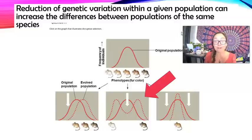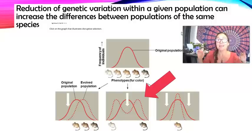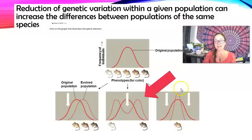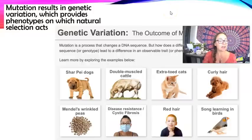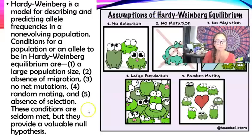Diversifying or disruptive selection can lead to speciation — if over time the two populations become so different they no longer choose to mate, speciation has occurred and they are two separate species. Mutations result in genetic variation, which provides phenotypes on which natural selection can act. They are the ultimate source of variation, and new phenotypes can be selected for, against, or be neutral.